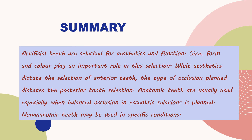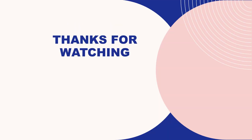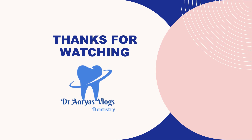In summary, anatomic teeth are selected for aesthetics and function. Size, form, and color play an important role in this selection. While aesthetics dictate the selection of anterior teeth, the type of occlusion planned dictates the posterior tooth selection. Anatomic teeth are usually used, especially when balanced occlusion in eccentric relations is planned. Non-anatomic teeth may be used in specific conditions. Please like, share, and subscribe to the channel for more videos. Thank you.